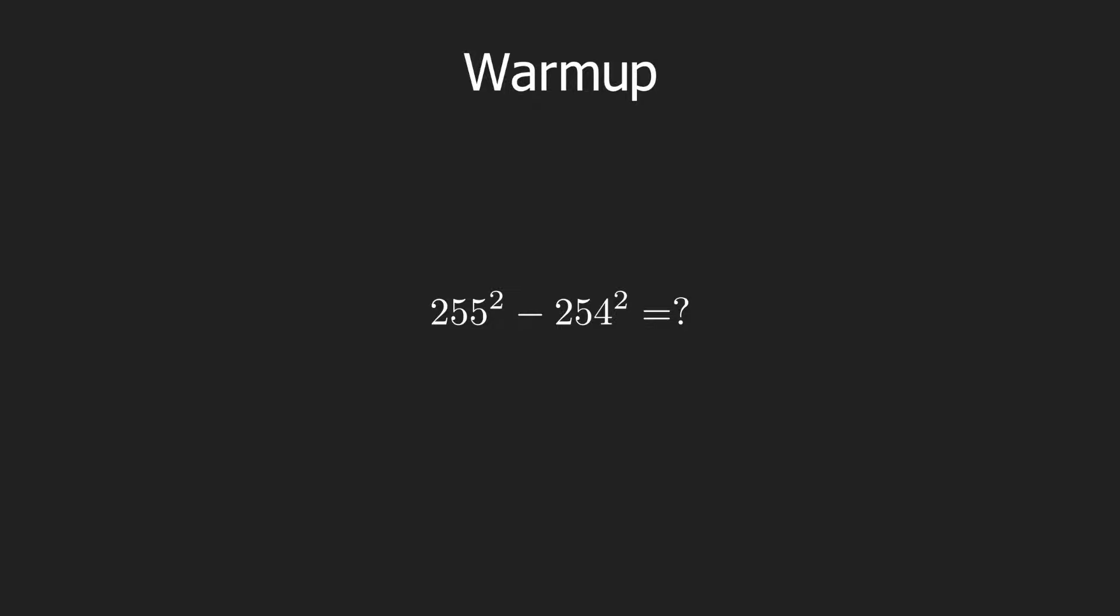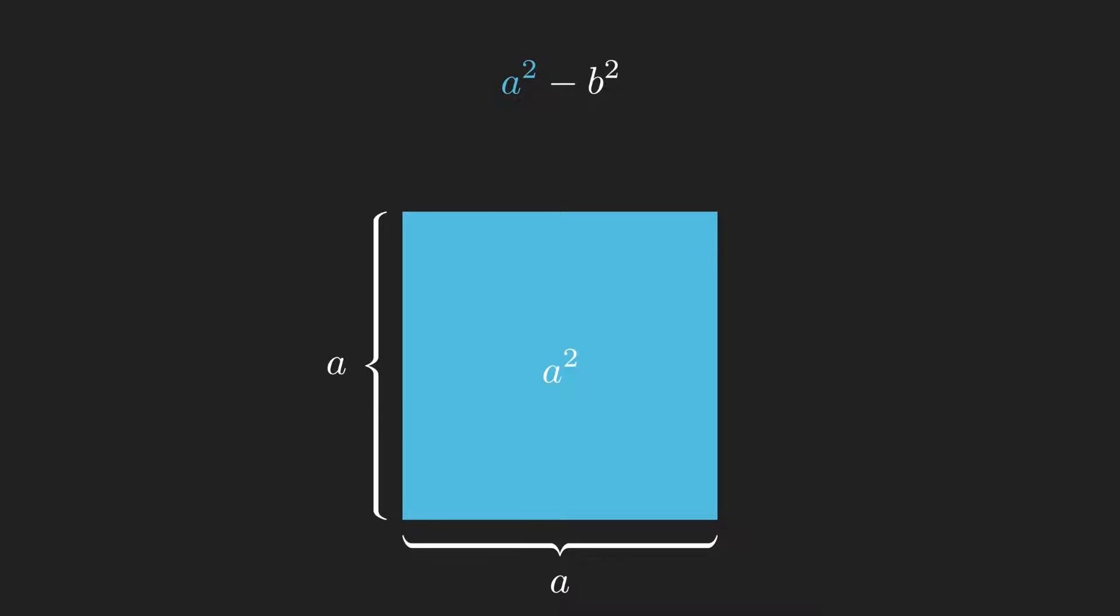255 squared minus 254 squared. To solve this, we start with the general equation, a squared minus b squared. We can visualize this equation by drawing a square with side length a, and then removing a chunk from the corner with side length b.